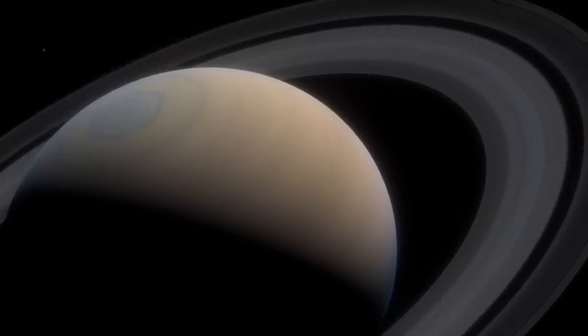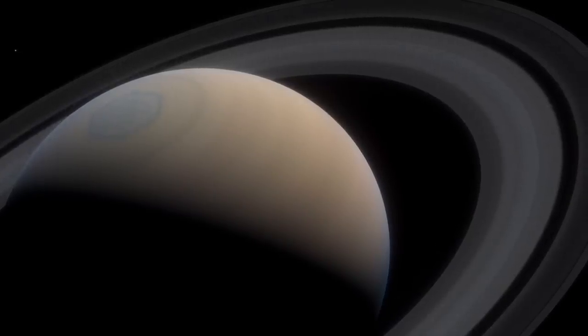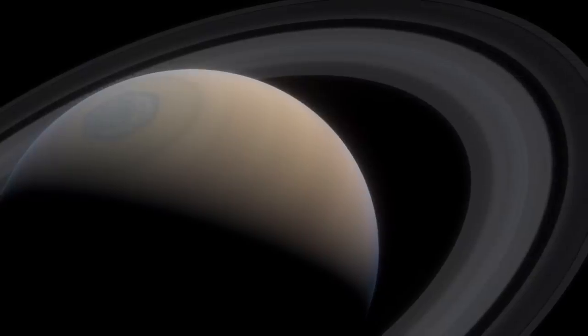However, measurements of the rings material falling into the equator of Saturn by the Cassini spacecraft suggest the rings will be gone in less than 100 million years.